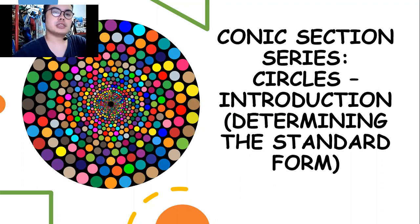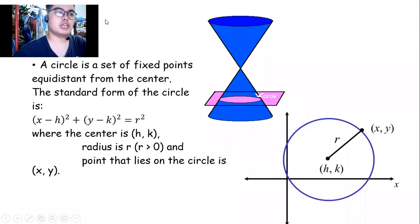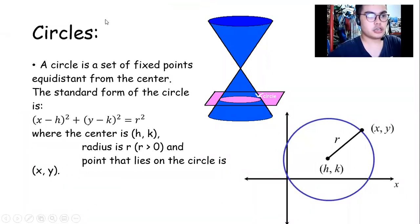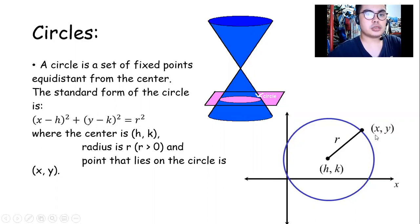What we are going to do first is to determine the standard form of the circle. A circle is a set of all points equidistant from the center. When we say equidistant, the distance is equal. What we are going to do is to connect a point that lies on the circle with the center, thus forming the radius. In order to find the radius, we have to use the distance formula between the center and the point that lies on the circle.